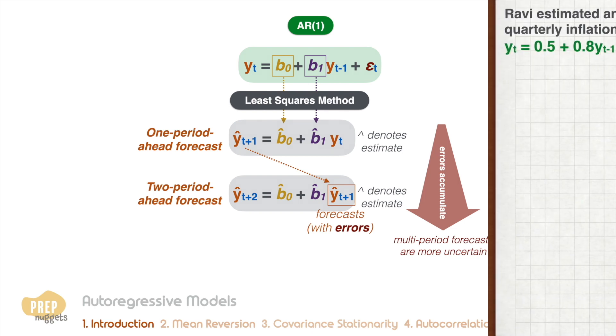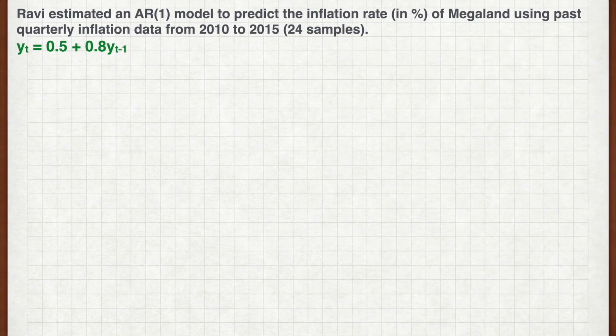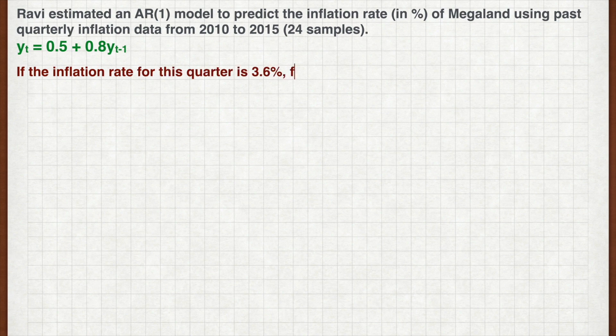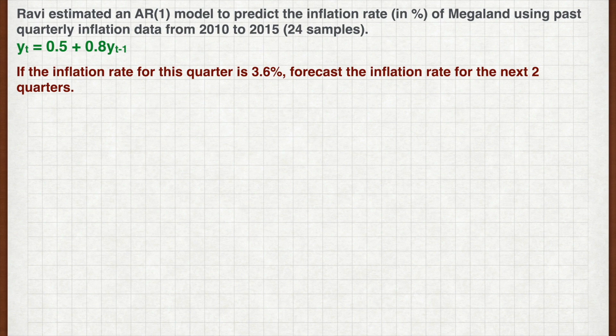Let's practice. Ravi estimated an AR(1) model to predict the inflation rate of Megaland using past quarterly inflation data from 2010 to 2015. If the inflation rate for this quarter is 3.6%, forecast the inflation rate for the next two quarters. Pause the video now and work out your answer.